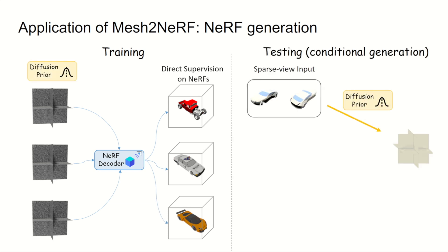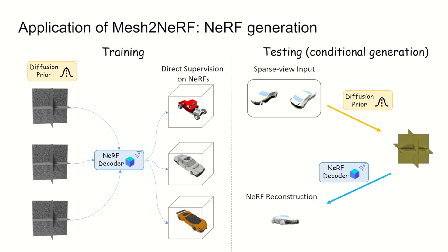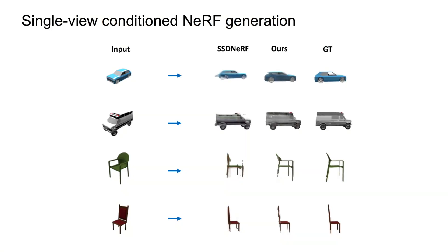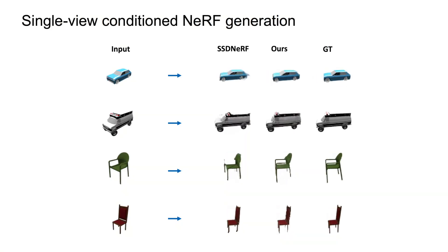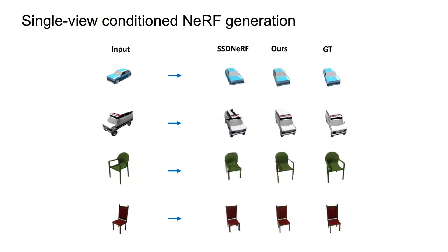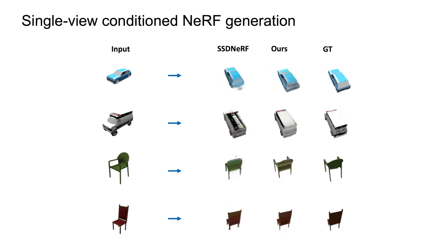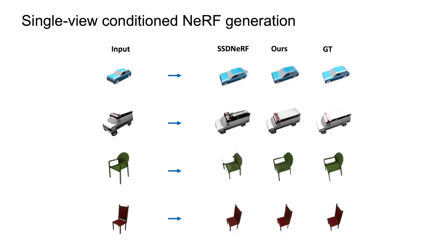At test time, we can generate NERFs conditioned on sparse view inputs. We show the results of conditional generation on ShapeNet cars and chairs, comparing them with state-of-the-art SSD NERF.